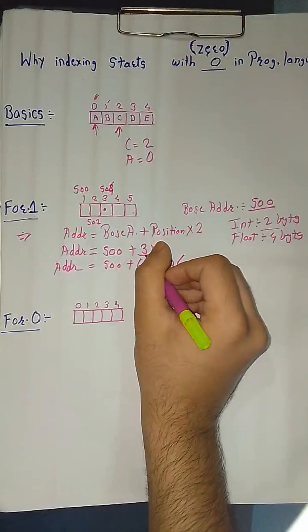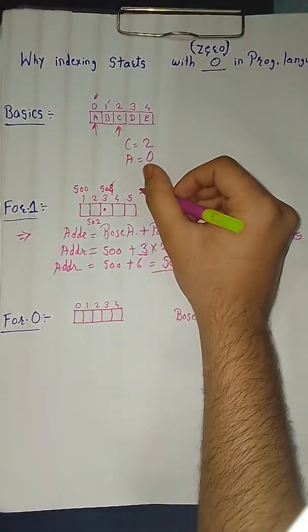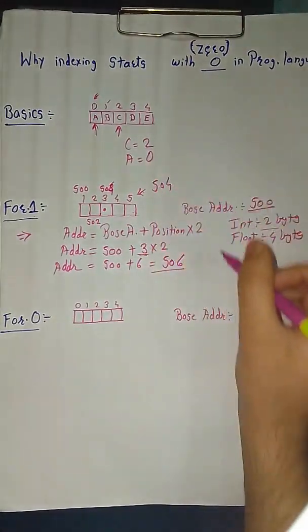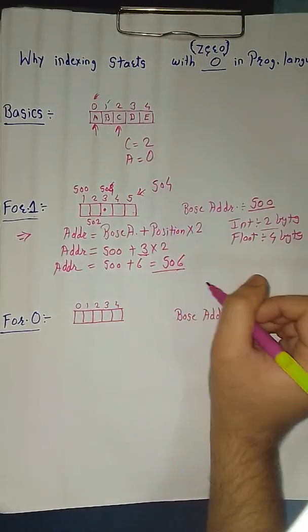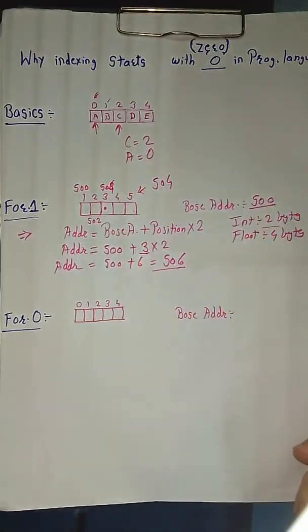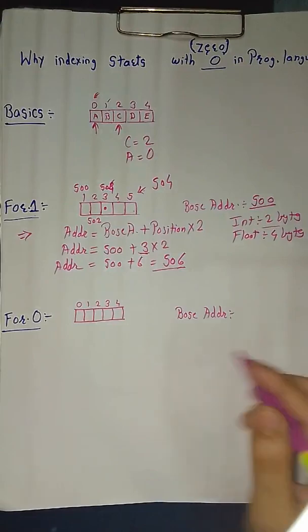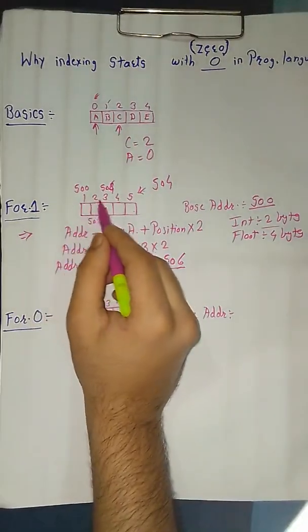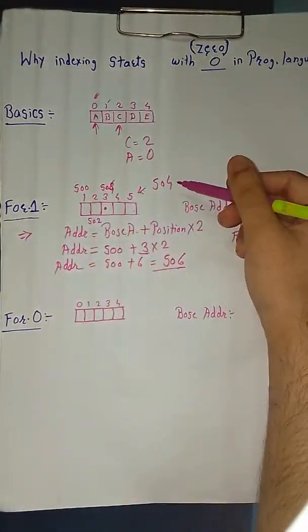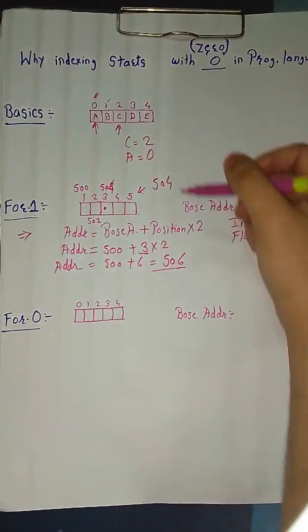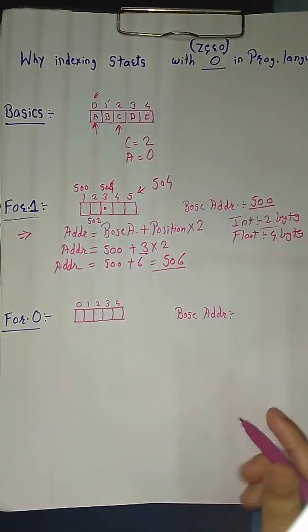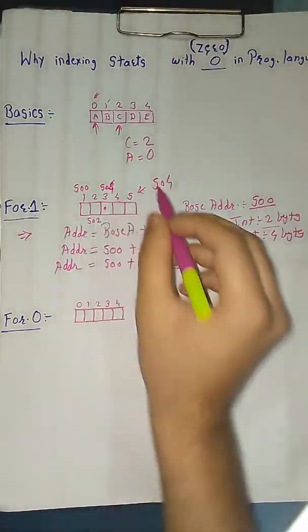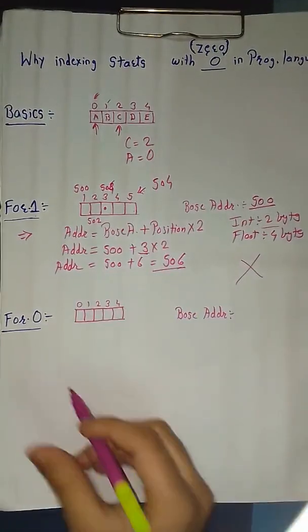We have taken the position as third. When calculating from this, we have got the address as 504, but by calculation we got 506. So this is where the main problem occurs. Because when we take the indexing as 1, 2, 3, 4, 5, there is a change in the address by calculation and by theoretical way. So this method will not work.